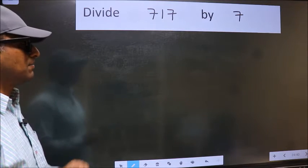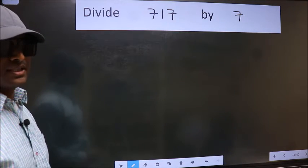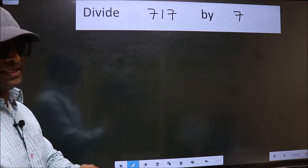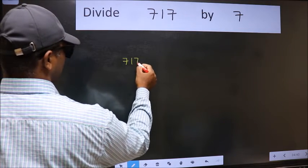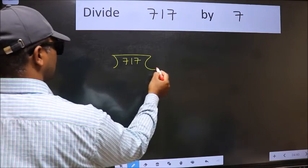Divide 717 by 7. To do this division, we should frame it in this way. 717 here and 7 here.